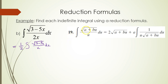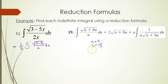Your a, which is your constant term, is 3. Your b, which is the coefficient of x under the radical, is negative 5. In this case u is x, which means du is equal to dx.